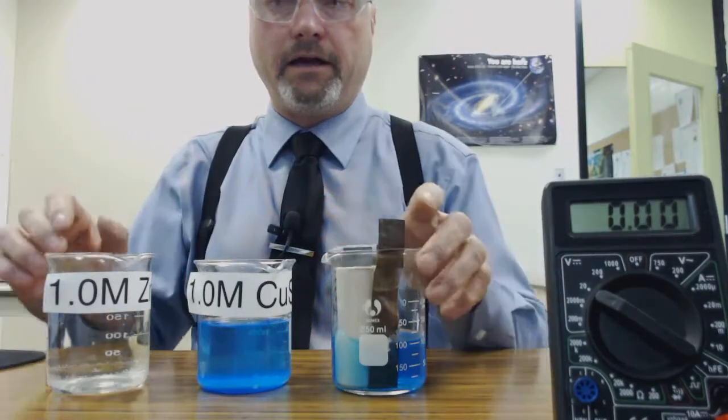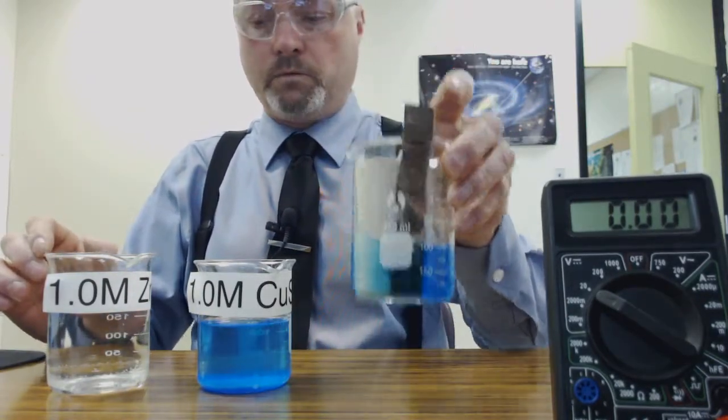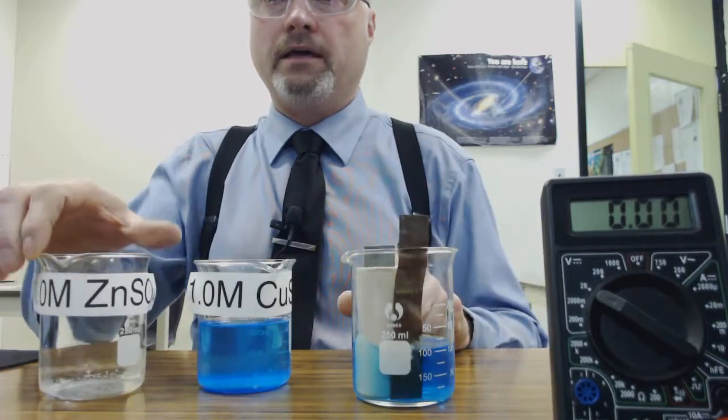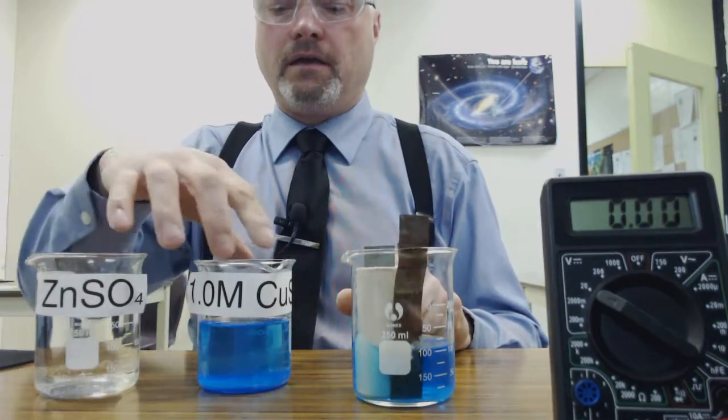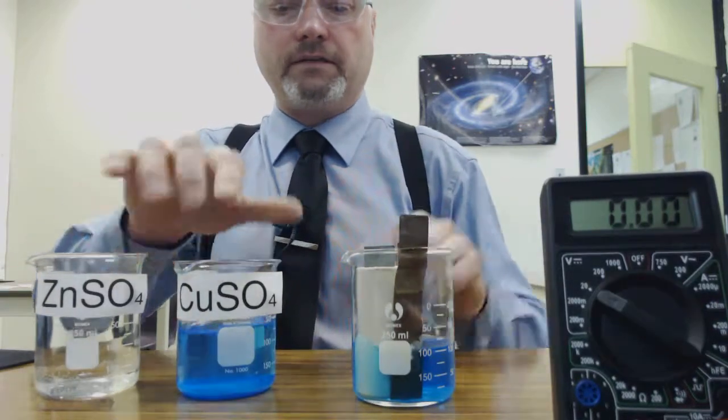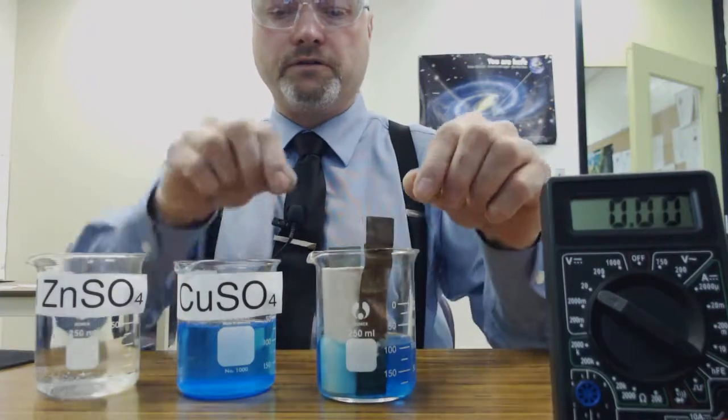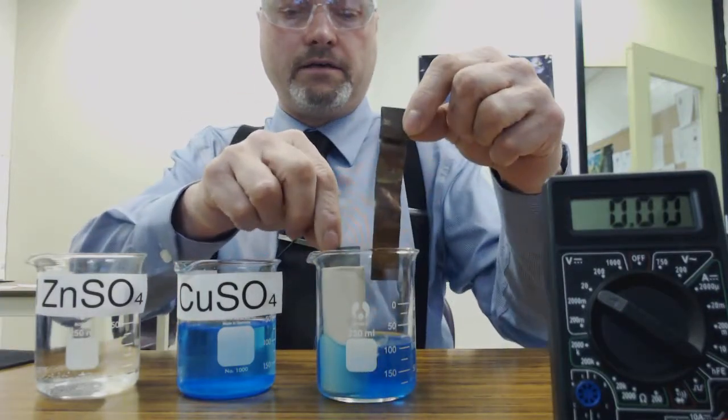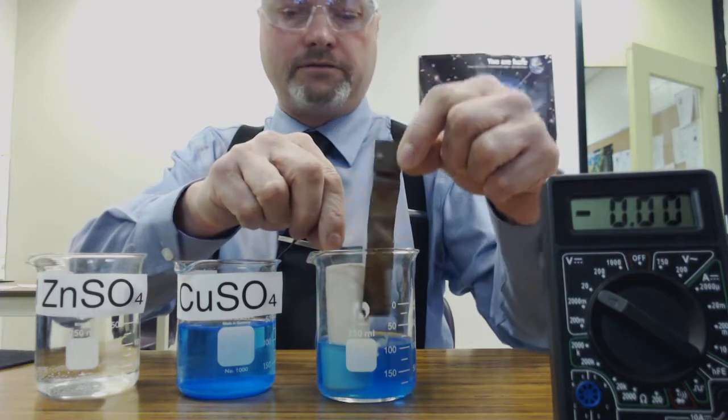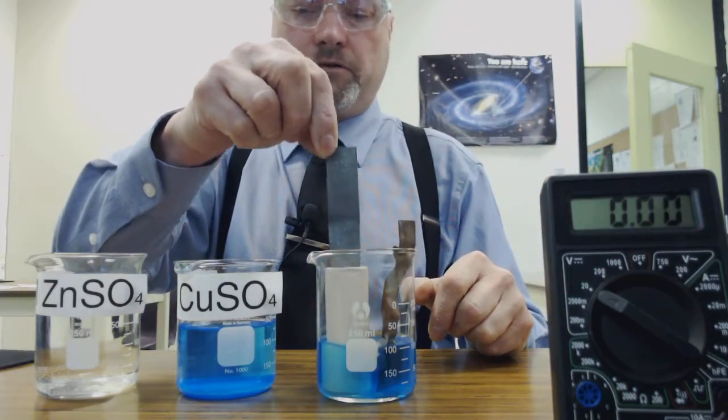And so we have prepared a galvanic cell right here using zinc sulfate and copper sulfate for our solutions, and of course in here is a copper electrode as well as a zinc electrode.